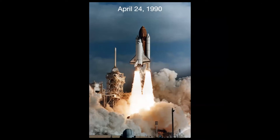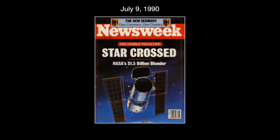The Space Shuttle Discovery launched on April 24th, 1990 from Cape Canaveral, with Hubble stored in the central cargo hold to be put into orbit. The expectation was that within about a month or so they would start taking data and we would see beautiful images. Unfortunately, the first thing that made the news about Hubble was a Time Magazine cover from July 9th, 1990: 'The Hubble telescope — star-crossed NASA's $1.5 billion blunder.' The cost had crept up from the original $300 million.